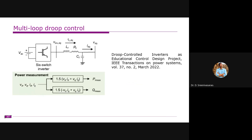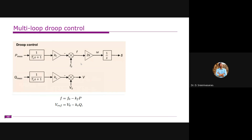Depending on the number of inverters, droop control may be needed for decentralized control. For simplicity, we consider only one inverter, so the droop portion is no longer required. The two important loops are: the power synchronization loop, which sets the phase angle based on active power, and the excitation loop, which adjusts the voltage magnitude based on reactive power.